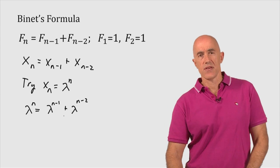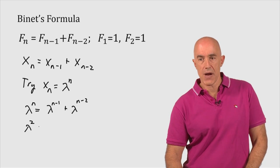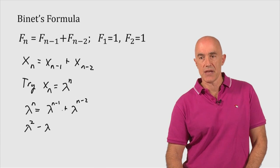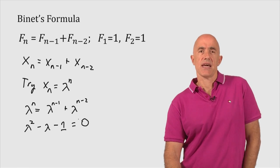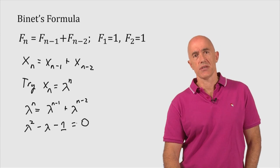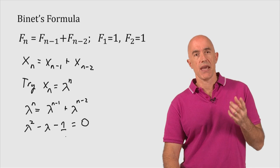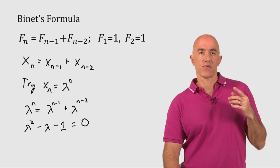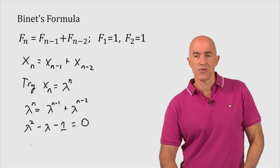We can divide this equation by lambda to the n minus 2 and collect terms. So we get lambda squared minus lambda minus 1 equals 0. So we get a quadratic equation. This is the same quadratic equation that we obtained when we determined what the golden ratio was. So there's actually two solutions here.